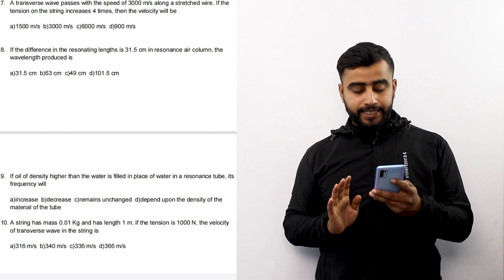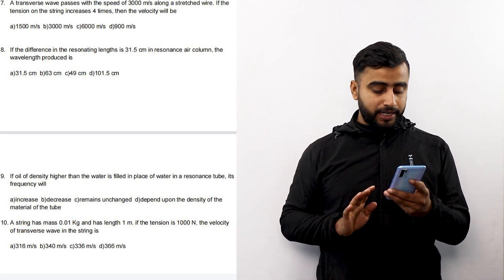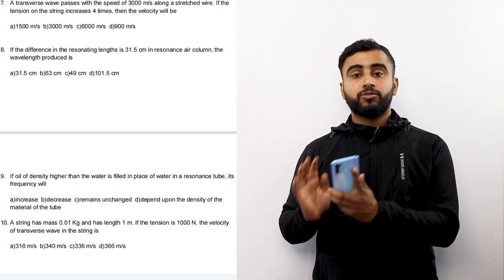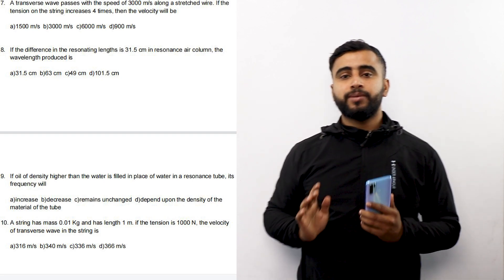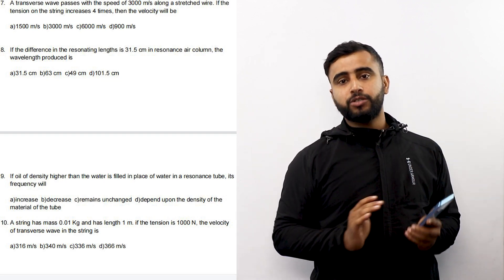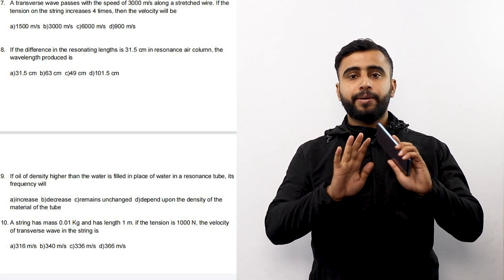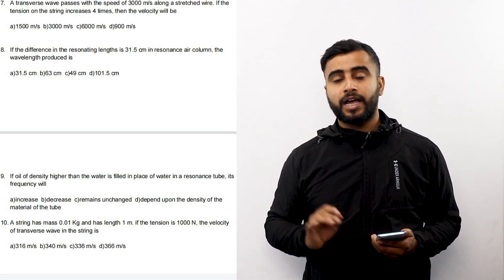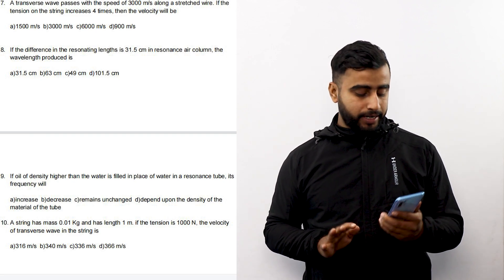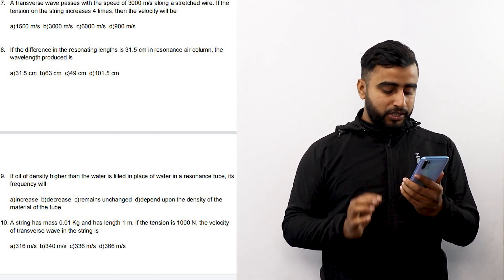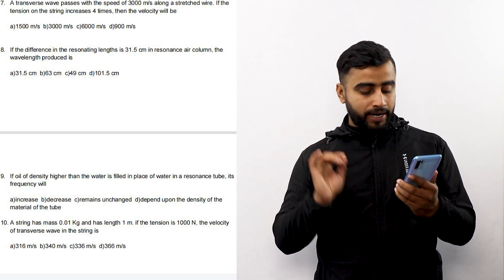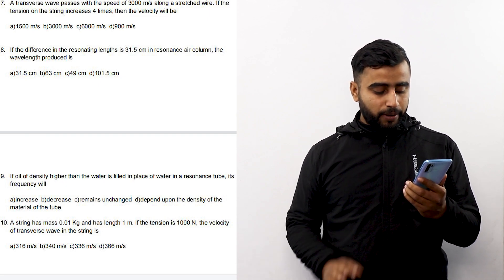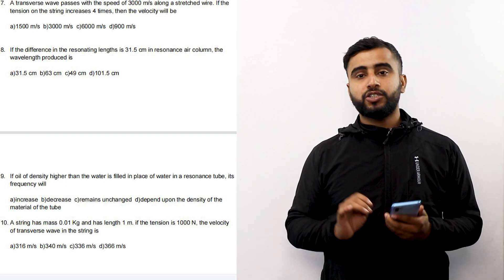Question number 9: If a liquid of density higher than water is filled in place of water in a resonance tube experiment, its frequency will remain unchanged. Question number 10: A string has mass 0.01 kg and length 1 meter. If the tension is 1000 N, the velocity of transverse wave in the string is to be found.